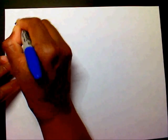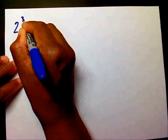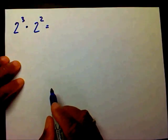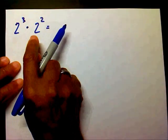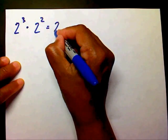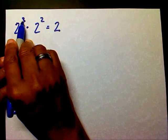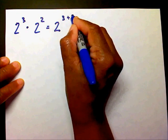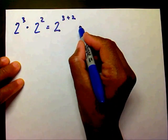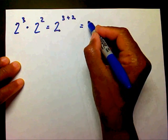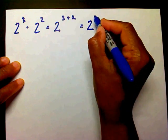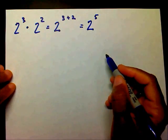Let's work a problem with an actual base where the base is a number. Let's say 2 to the third times 2 to the second. Since I have the same base, I'm going to bring my base over and add 3 plus 2. So my solution is going to be 2 raised to the 3 plus 2, which is 5th power.